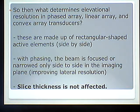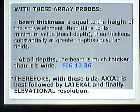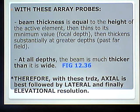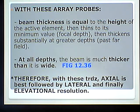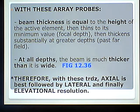With phased array probes, beam thickness equals the height of the active element, thins to its minimum value at the focal depth, then thickens again substantially at greater depths. At all depths, the beam is much thicker than it is wide. So with these transducers, axial resolution is always best, then lateral resolution, but elevational resolution is poor — nothing is done to improve it.